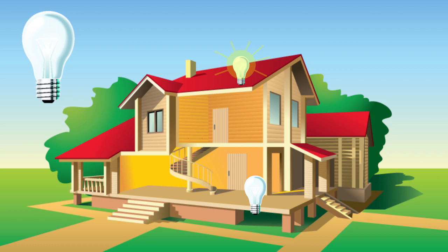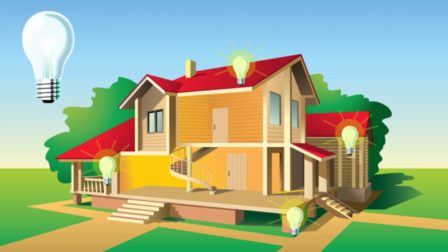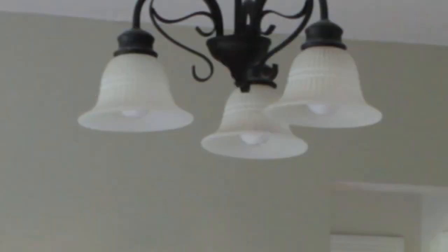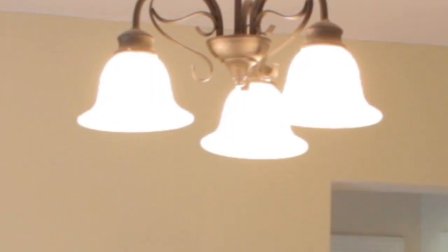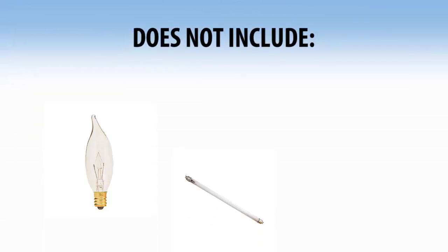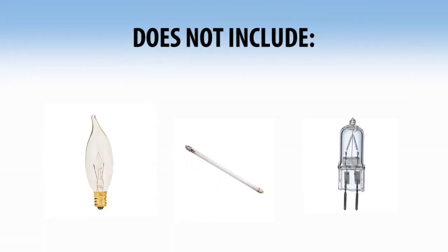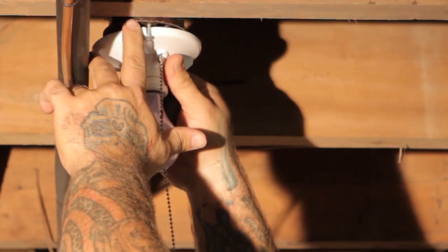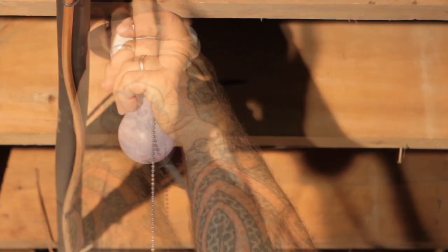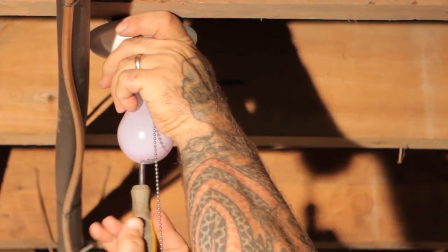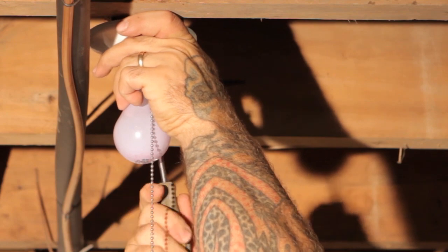This includes lights in the attic, basement, garage, outbuildings, and any found on the exterior of the property as well. This is only limited to standard size light bulbs and does not include candelabra, fluorescent, or halogen lights. You must also take any necessary action to re-secure all loose fixtures or ceiling fans. This is only for items that are hanging.